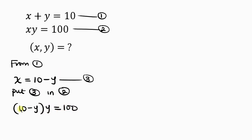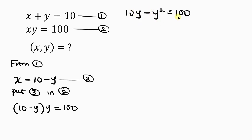Now let's expand the brackets. 10 times y is 10y, minus y times y is y squared, and this equals 100. Now I'm going to move everything to one side — moving what I have on the left-hand side to the right-hand side of the equation.